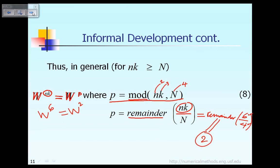We can make a very general conclusion: W raised to the power nk is always equal to W raised to the power p, where p equals the remainder of nk divided by capital N. Now, making use of this nice relationship will be very useful going forward.